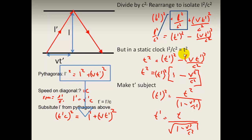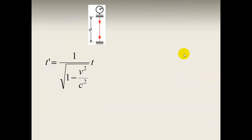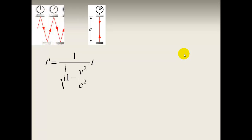T prime is the measurement of what happens in my frame of reference as measured by the person in the other frame of reference. T without the prime is how I measure the event in my own frame of reference — this is proper time because the clock is stationary in my frame. One over the square root of one minus V squared over C squared is also called gamma, or the Lorentz factor.